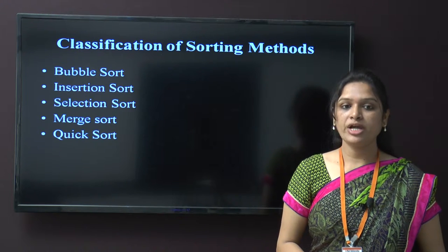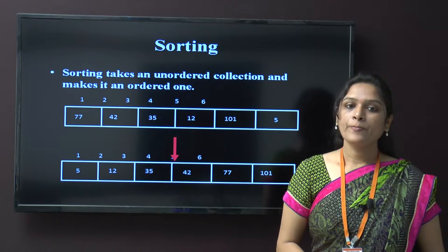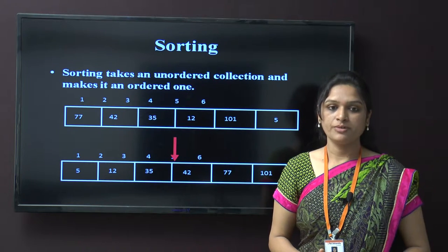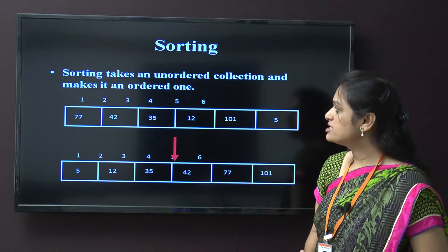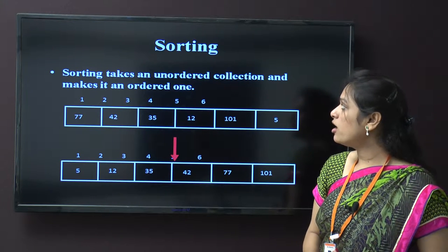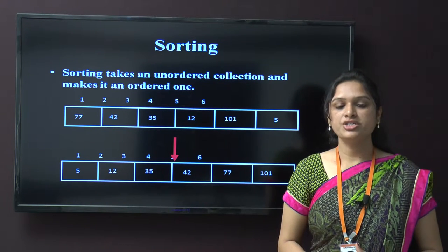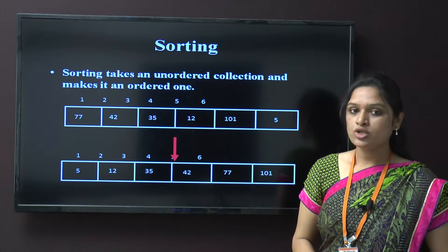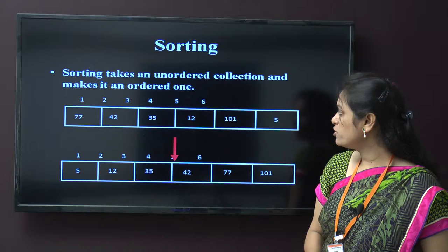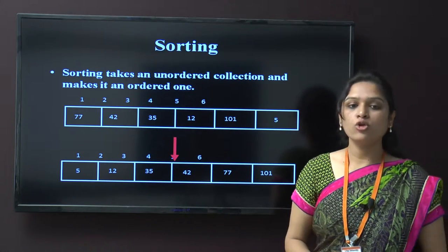Today we will discuss about 2 techniques — bubble sort and merge sort. What is the main criteria of bubble sorting? Here there is an example given. If there is a value given, then sorting takes place on an unordered collection and makes it ordered. There is an unordered list given — values 77, 42, 35, 12, 101, and 5 — and we have to arrange them in ascending order. So we have to follow some steps.